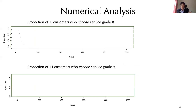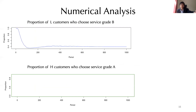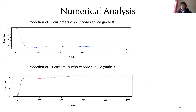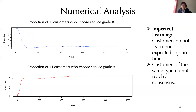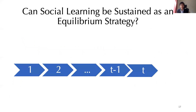Do customers of a type reach a consensus? Plotting the time period on the x-axis and the proportion of customers of a particular type choosing a particular decision on the y-axis — if customers of a type reach a consensus, these graphs should have lines around zero and one. Unfortunately, that is also not true. So in this imperfect learning steady state, customers do not learn the true expected service quality, and customers of the same type do not reach a consensus.